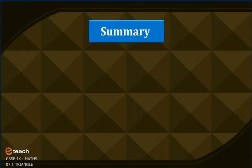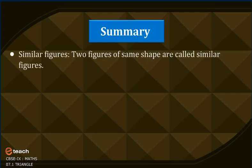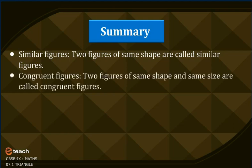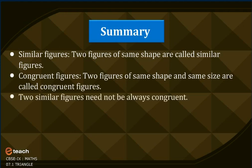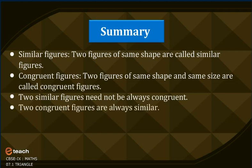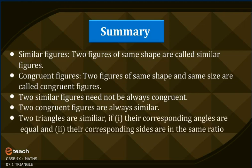Summary: Two figures of the same shape are called similar figures. Two figures of the same shape and same size are called congruent figures. Two similar figures need not always be congruent. Two congruent figures are always similar. Two triangles are similar if: one, their corresponding angles are equal, and two, their corresponding sides are in the same ratio.